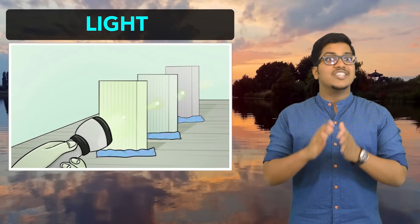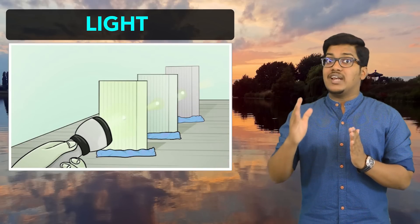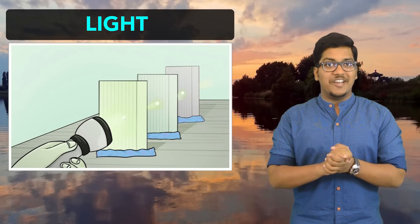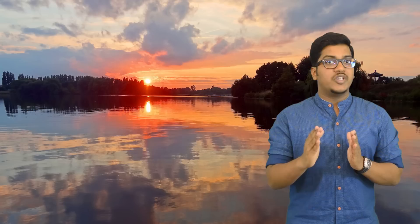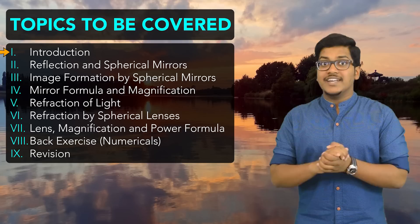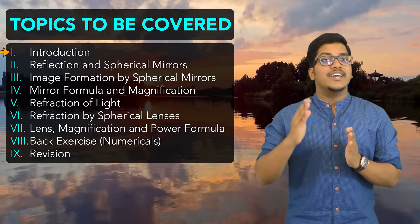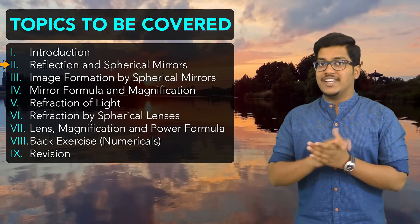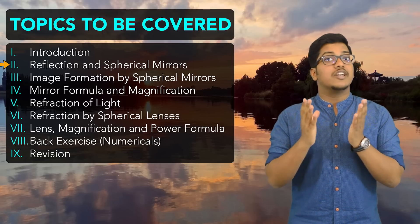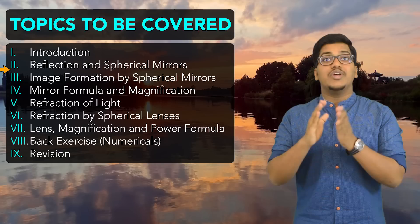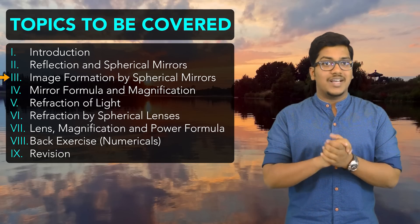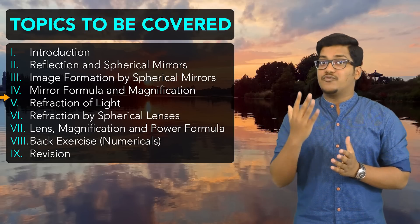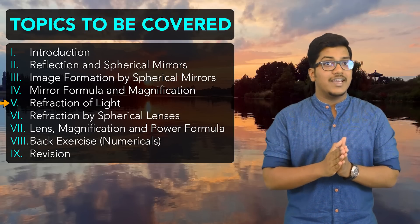Wow, good job! So in this chapter, we will study the straight line treatment and reflection. This chapter, we will complete in total nine lectures. The first lecture is the introductory one. Lectures two, three, and four, we will study reflection — first understanding what reflection is, then image formation, and then formulas and related numericals. Lectures five, six, and seven, we will study refraction.